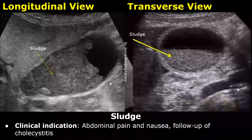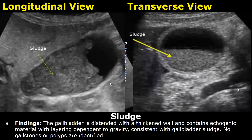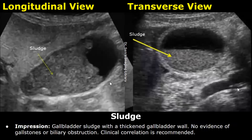For gallbladder sludge, the clinical indication can be abdominal pain and nausea, or follow-up of cholecystitis. In the findings, you can write about the distended gallbladder, the thickened wall, and what it contains — as sludge appears echogenic with layering dependent to gravity, which is consistent with gallbladder sludge. In the impression, you can write gallbladder sludge with thickened gallbladder wall. If there are no gallstones or biliary obstruction, you can write that line, and then clinical correlation is recommended.